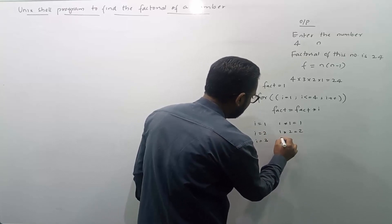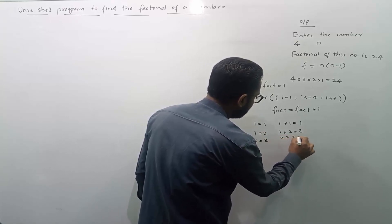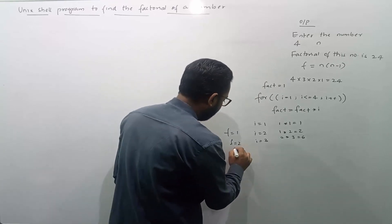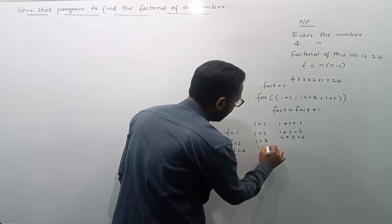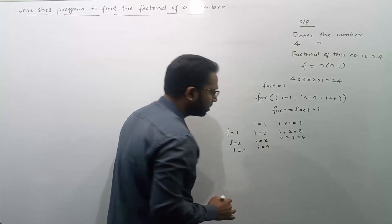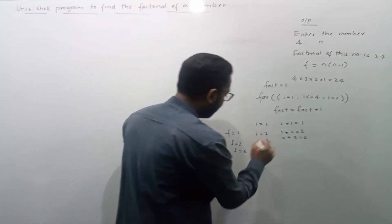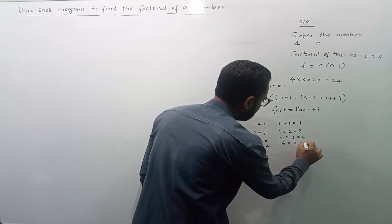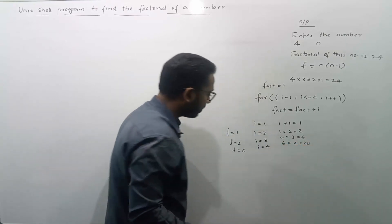So fact is 2, 2 into 3, 6. Then now fact is 6. i now gets incremented by 1 and i becomes 4. So fact is 6 and i is 4 and I will get 24.